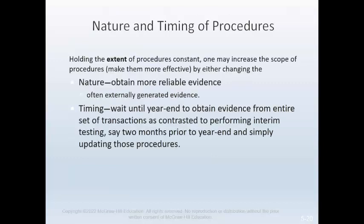Holding the extent of audit procedures constant, the auditor may increase scope by obtaining more reliable evidence — often externally generated — and timing audit procedures closer to year-end to obtain evidence from the entire set of transactions rather than performing interim testing and updating. For example, if auditors want to increase assurance related to the existence of accounts receivable, they could confirm the ending balance directly rather than relying on inspection of internal documents.